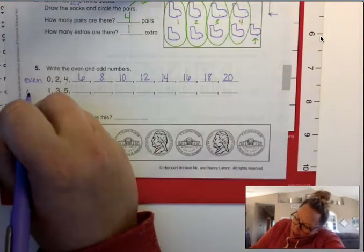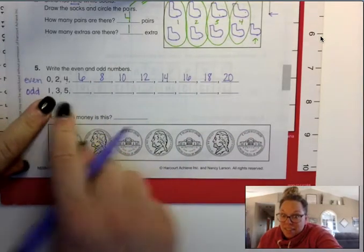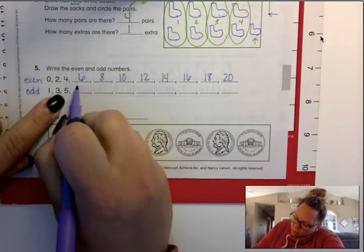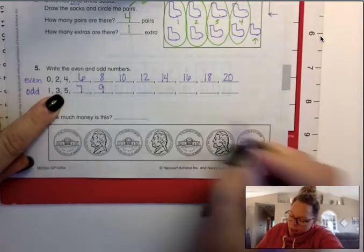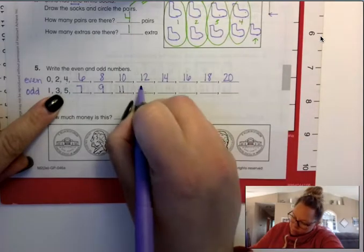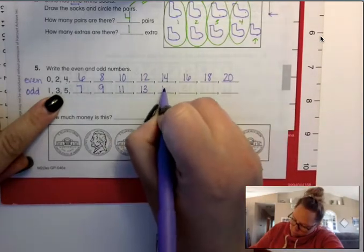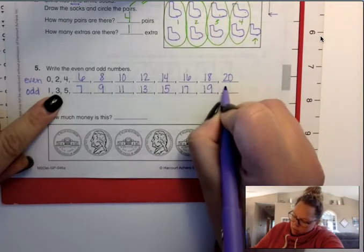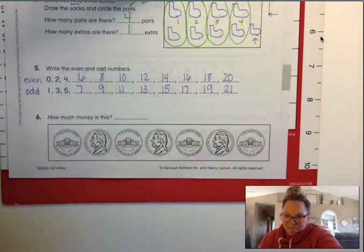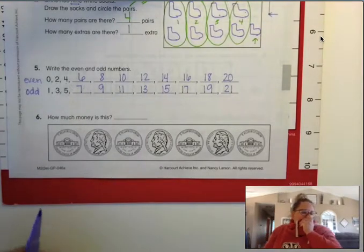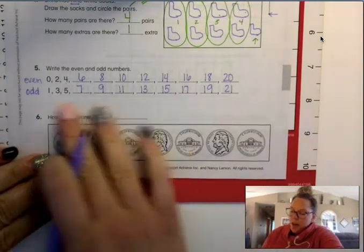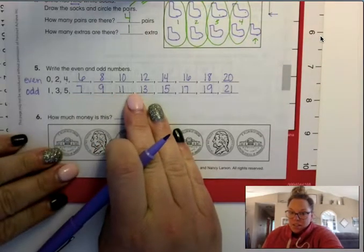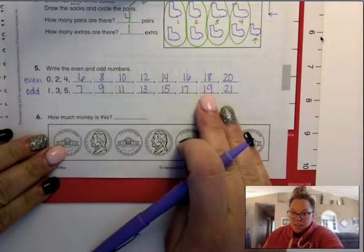And then we need our odd numbers. Those are ones that are going to have something left over, kind of like our socks had something left over. 1, 3, 5, 7, 9, 11, 13, 15, 17, 19, 21. Those are our odd numbers.